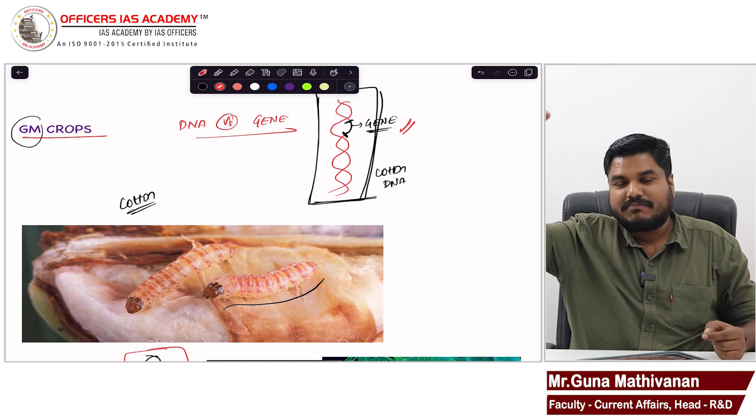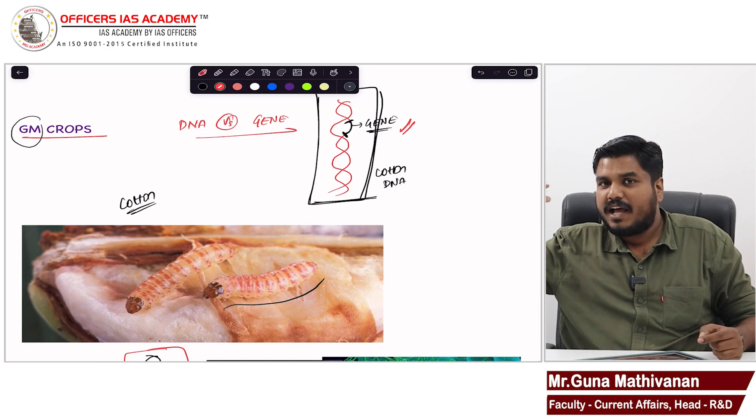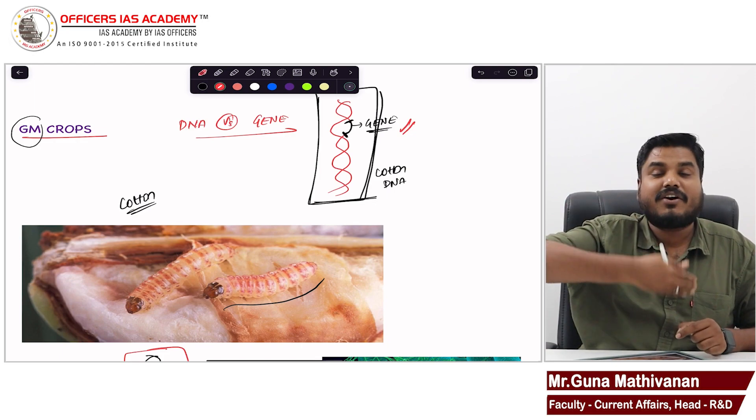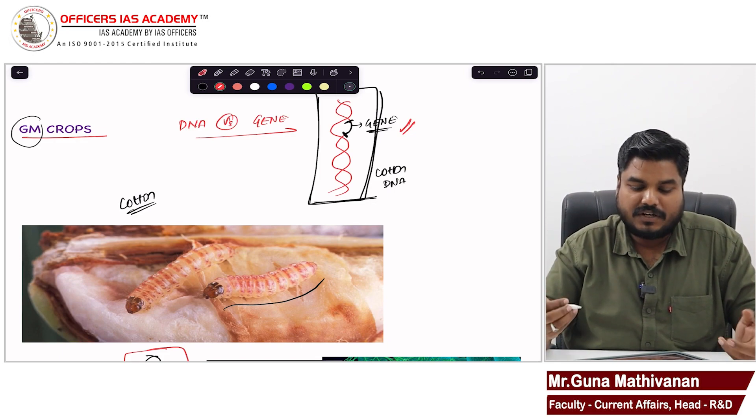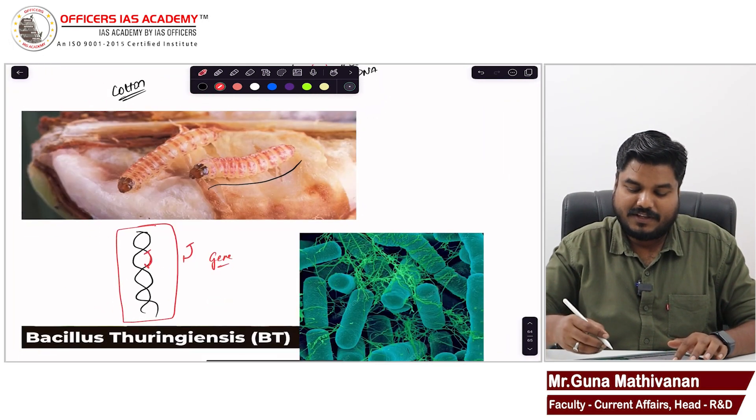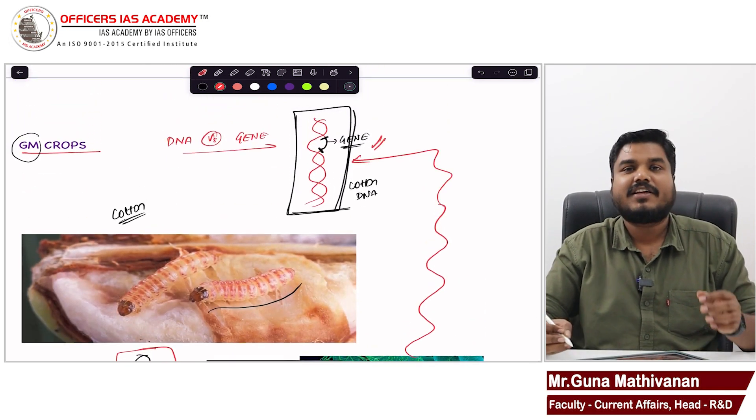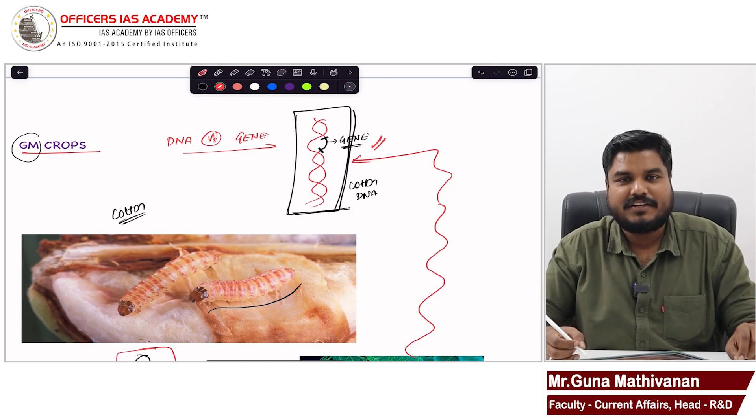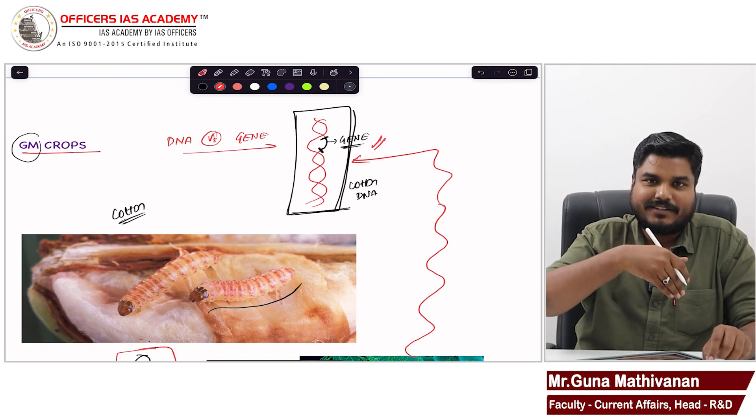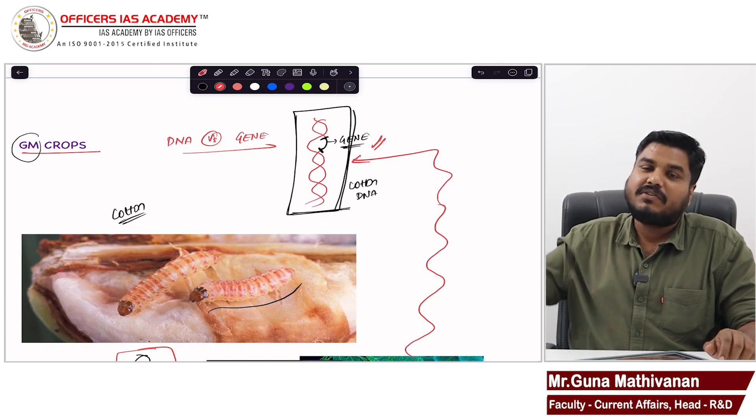So what the American company did is they took the DNA of this Bacillus thuringiensis. From that DNA, they took two important genes, segments of DNA. The two important genes they added to the cotton's DNA. We have cotton's DNA. And we have this bacteria's DNA. From this bacteria's DNA, a gene was removed and that gene was attached to the cotton's DNA.